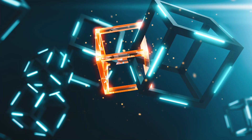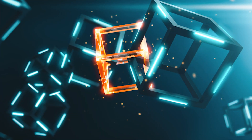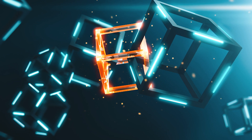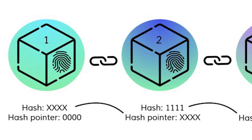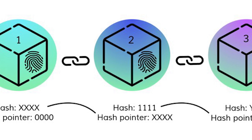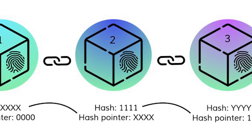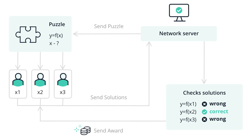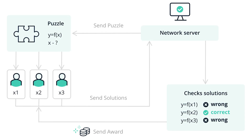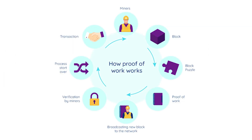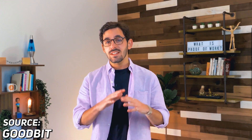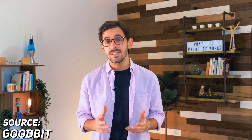Storing information on the blockchain means having each block of information linked with the previous block. This is achieved by each block containing a cryptographic key of the previous — this is called a hash. In order to make a new hash for a new block of information, a massive amount of computer work must be done to confirm the transaction. This is called proof of work. Proof of work allows the blockchain to be resistant to hacker attacks, and only confirmed data is allowed to be added. It's what allows this global network to reach group consensus and verify transactions in a decentralized way.